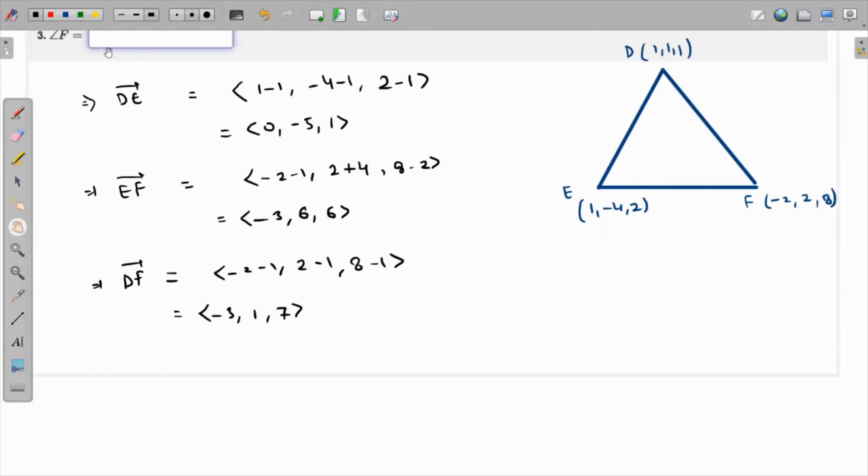I'll say that the angle between these two vectors is alpha. So DE dot DF equals the magnitude of DE times magnitude of DF times cosine of alpha. DE is <0, -5, 1> and DF is <-3, 1, 7>.